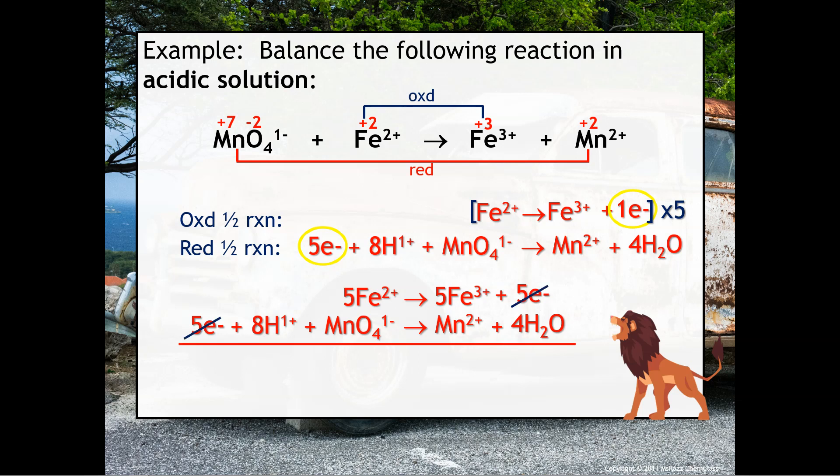Putting the arrows in line makes it much easier to cancel similar substances on either side of the arrow. Then you rewrite everything exactly as you see. You should be balanced for both mass and charge.